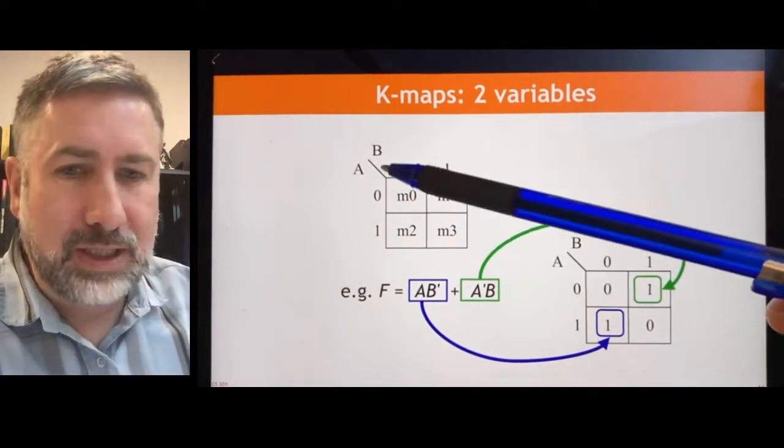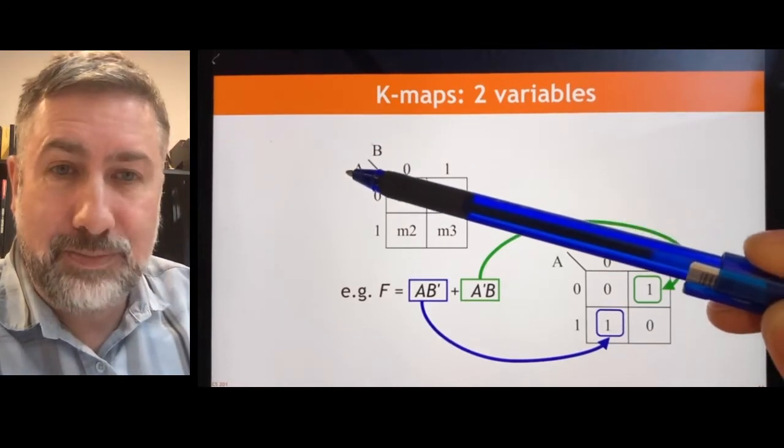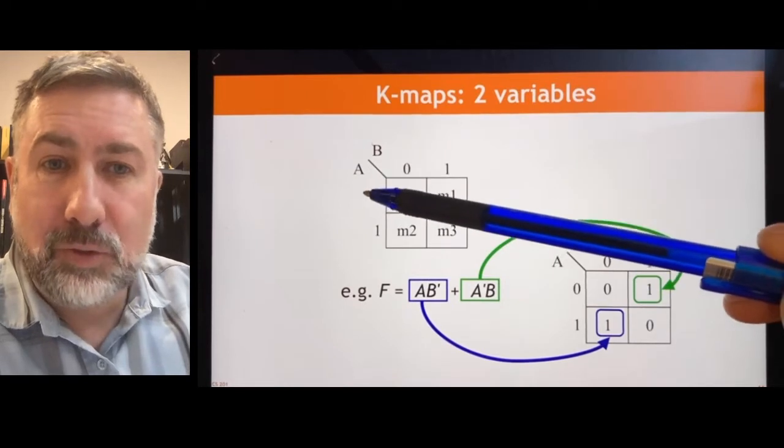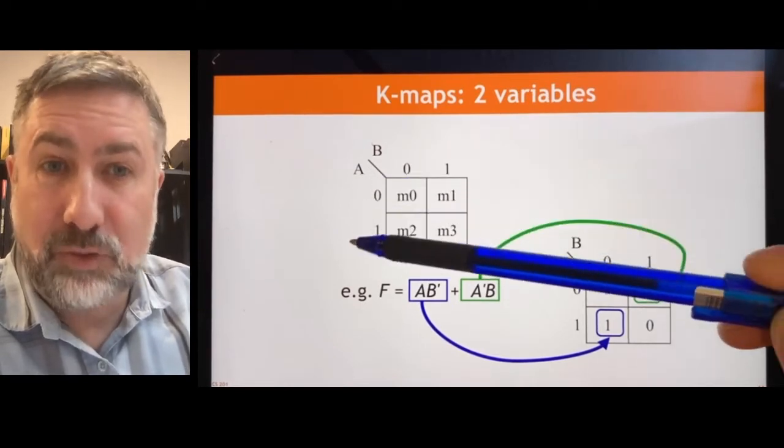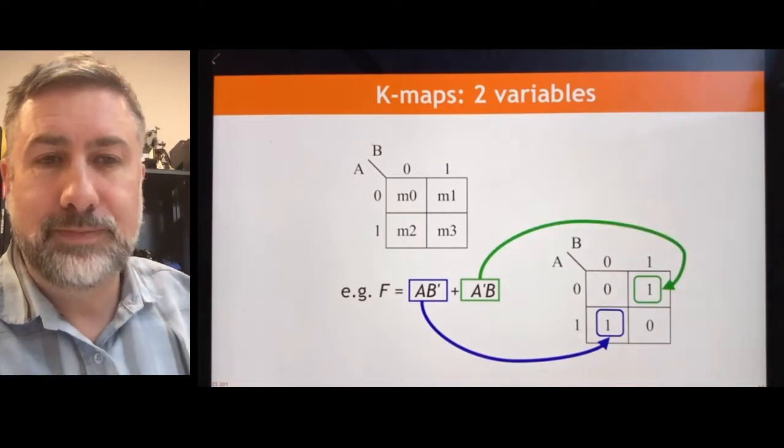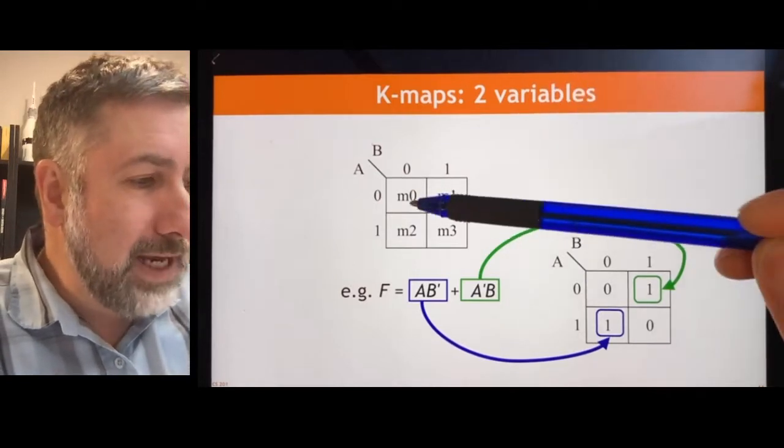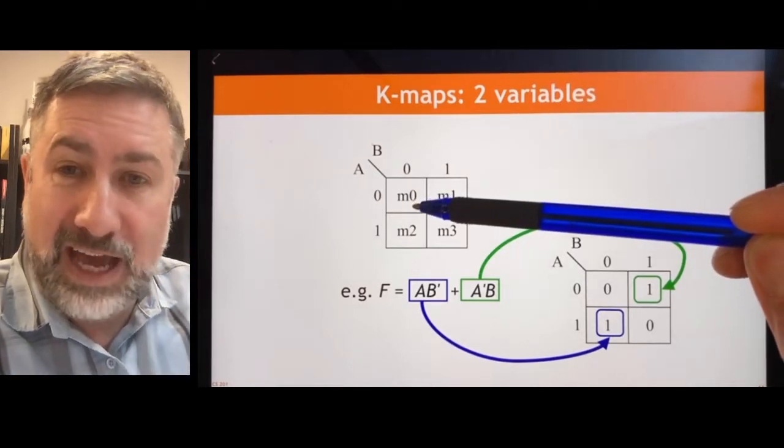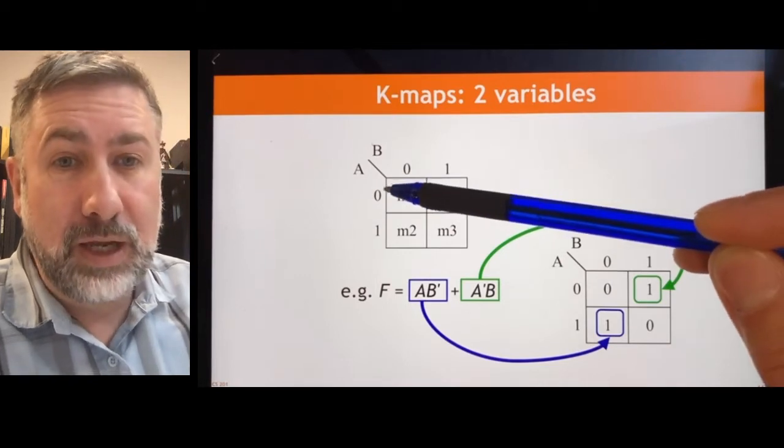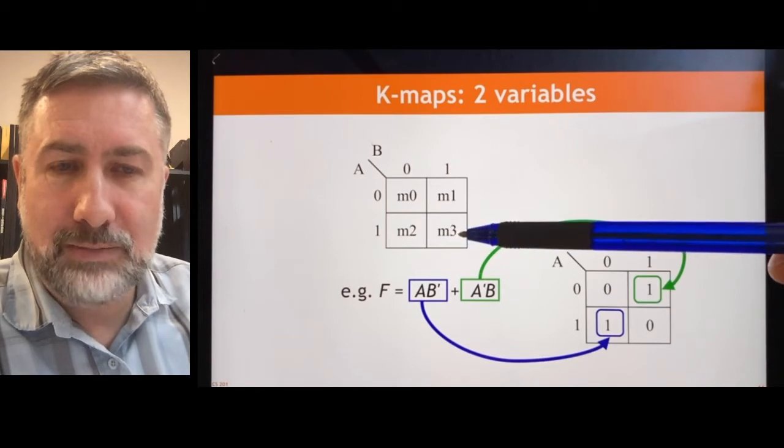So what we're going to do is we're going to take our variables, A and B, and we're going to list them, half of them vertically and half of them horizontally. And then we're going to write out all the possibilities for these variables. A could be 0 or 1, B could be 0 or 1. Pretty straightforward. There are only four possibilities. And then all we do is we write out the minterm for that input combination. When A is 0 and B is 0, that's minterm 0. When A is 0 and B is 1, that's minterm 1, minterm 2, and minterm 3.